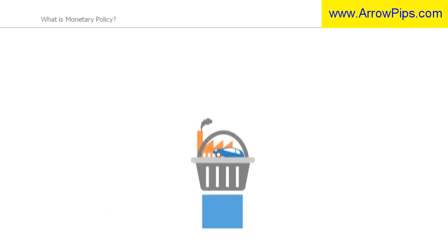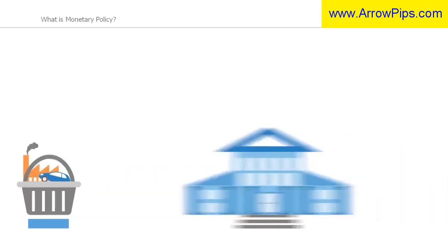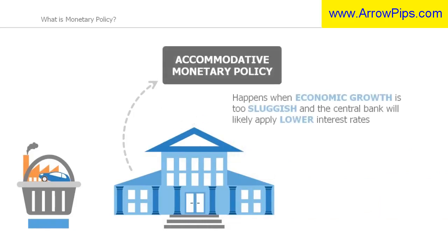If policymakers observe that economic growth is sluggish, a period of accommodative monetary policy might be seen, such as the lowering of interest rates and allowing capital to become more readily available. Increasing the supply of money subsequently reduces the value of the currency.